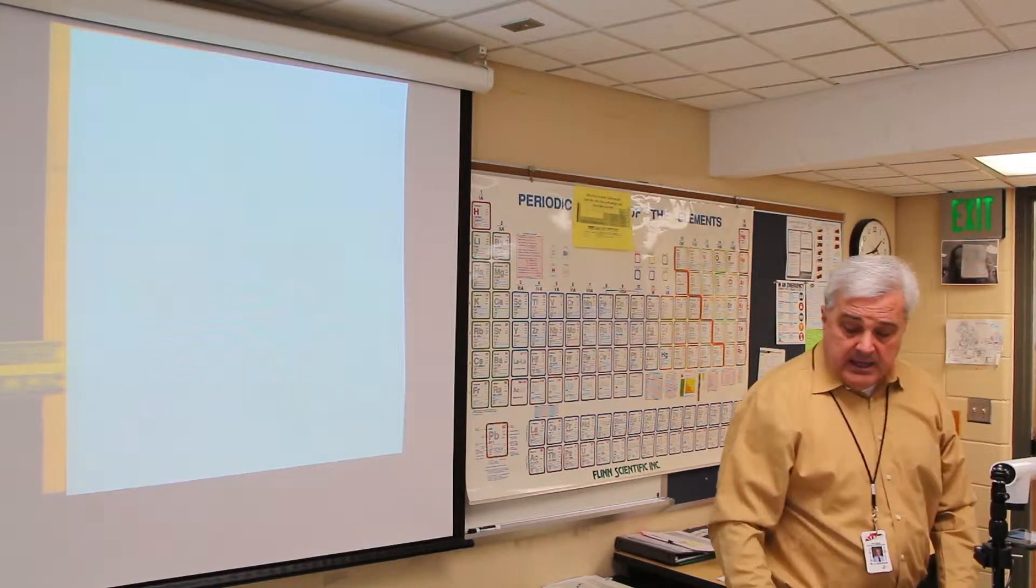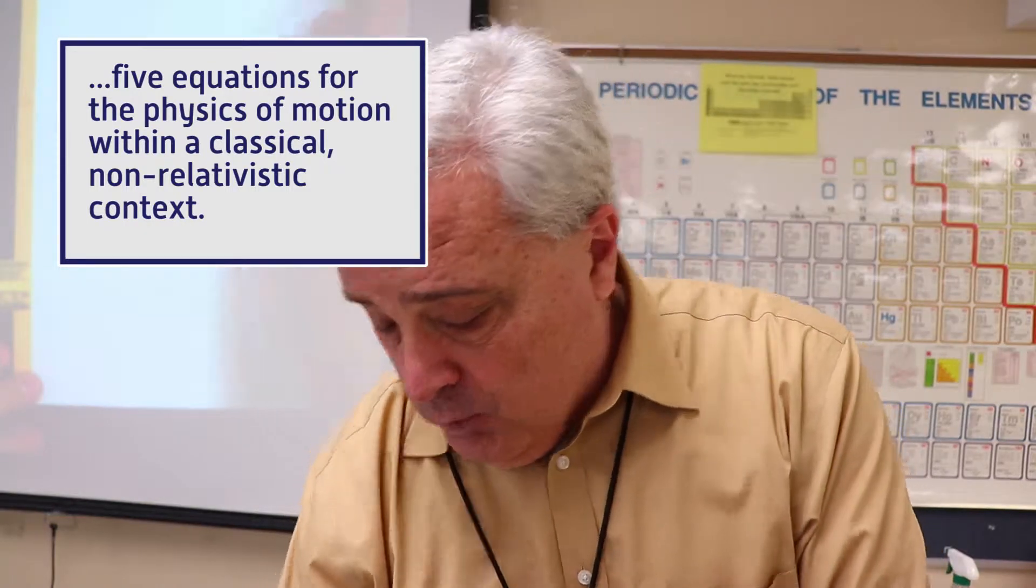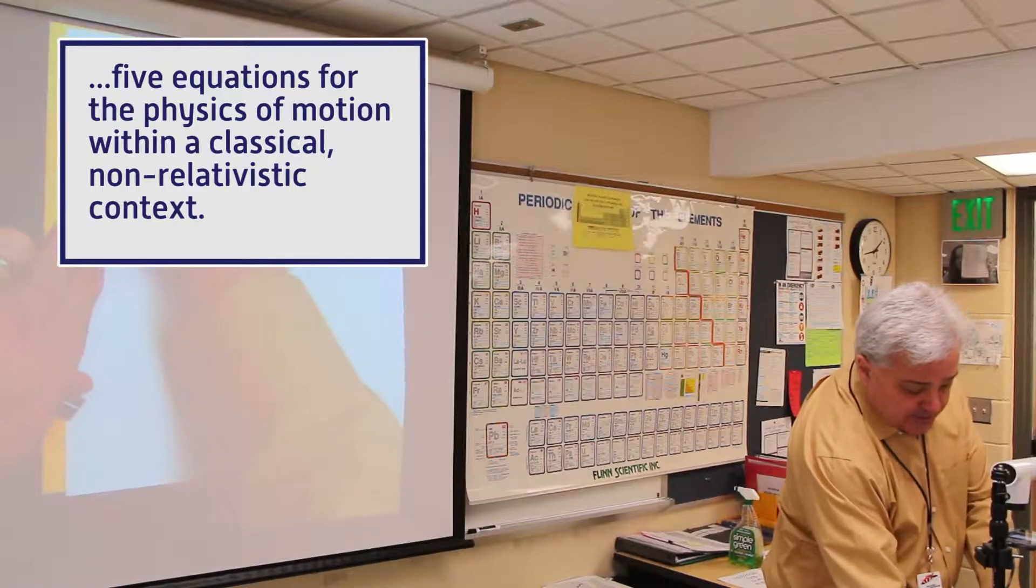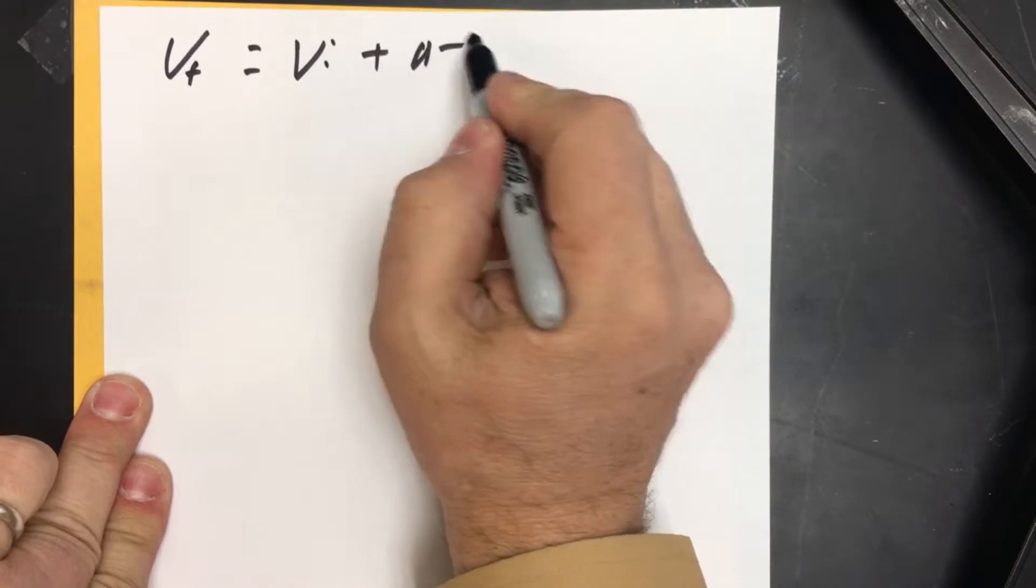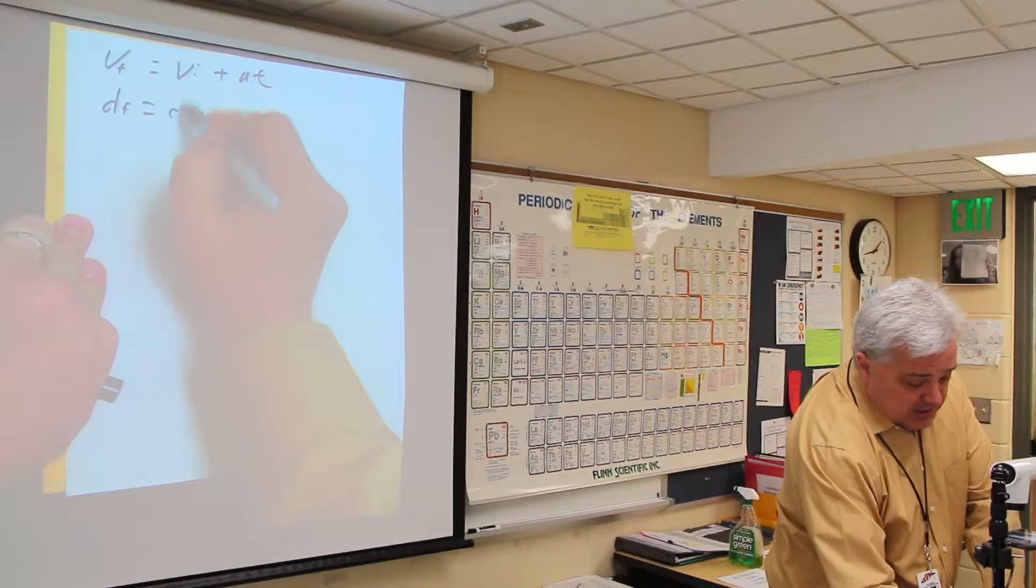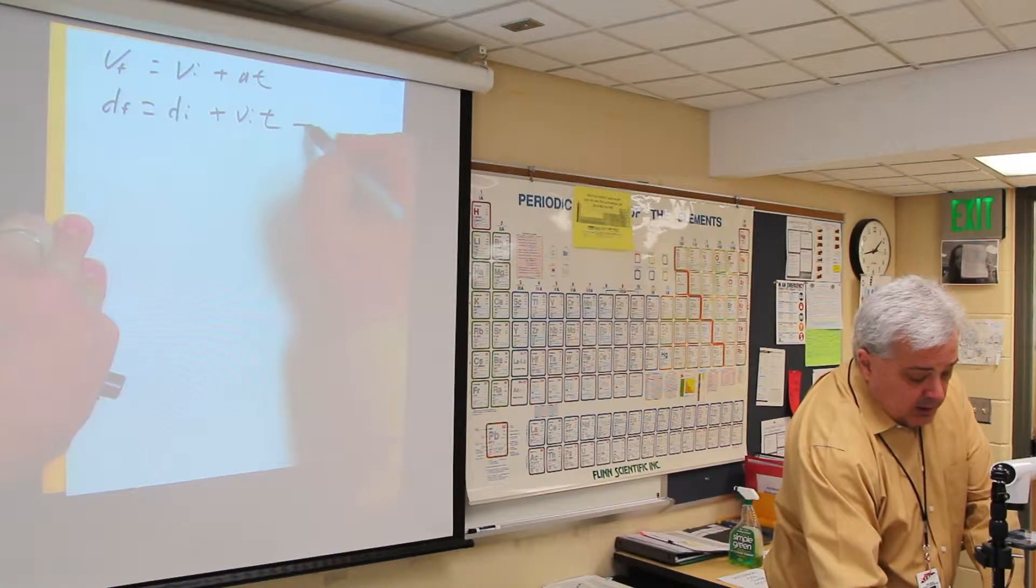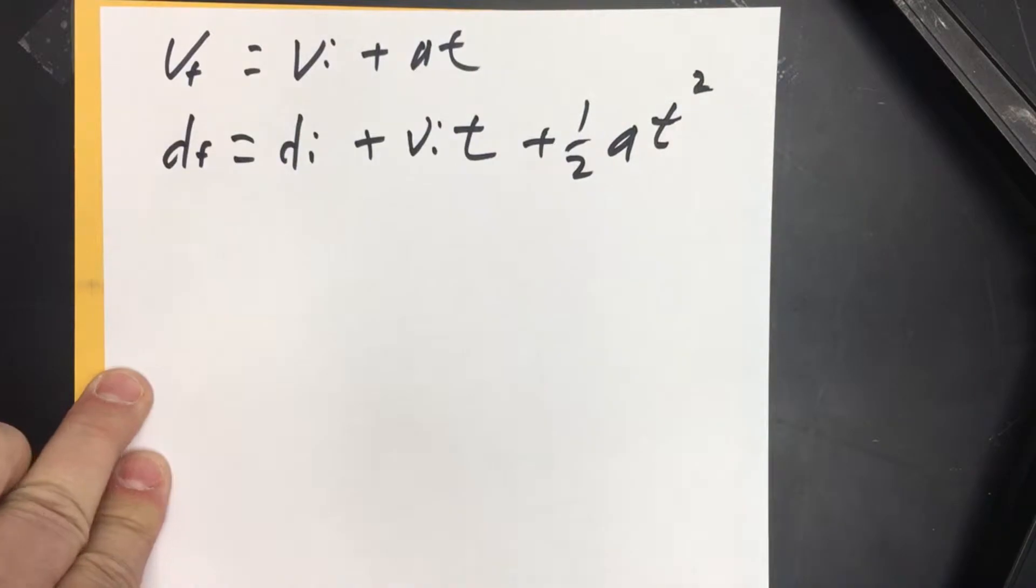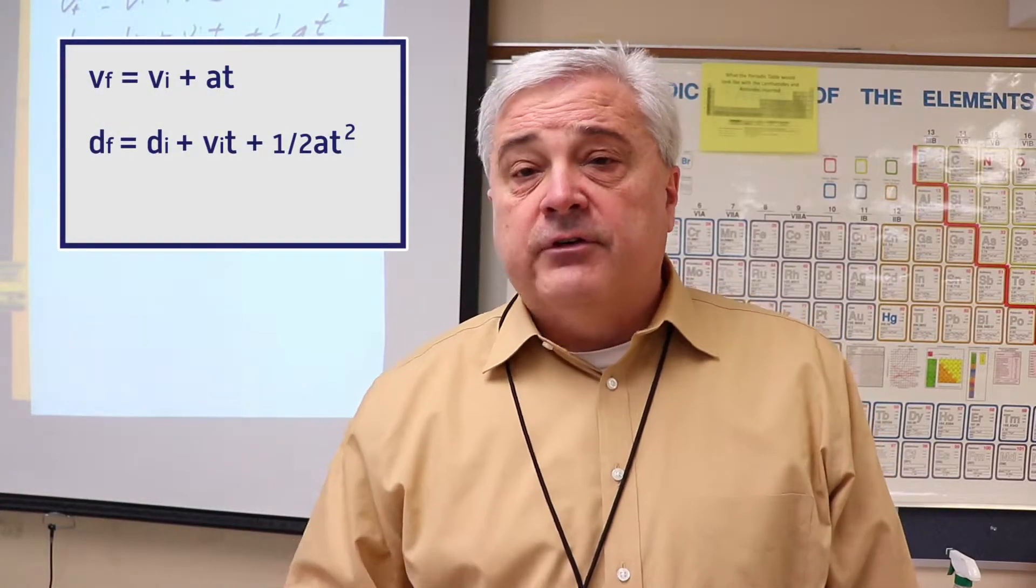We really only need five equations for all of physics. The two that we're going to use most often are: final velocity equals initial velocity plus a*t, and final distance is initial distance plus initial velocity times time plus one-half the rate of acceleration t squared. Those two equations are going to cover the vast majority of physics questions in Newtonian or non-relativistic motion.